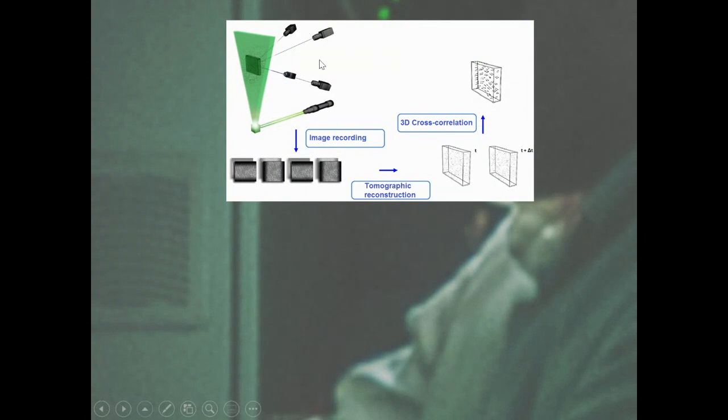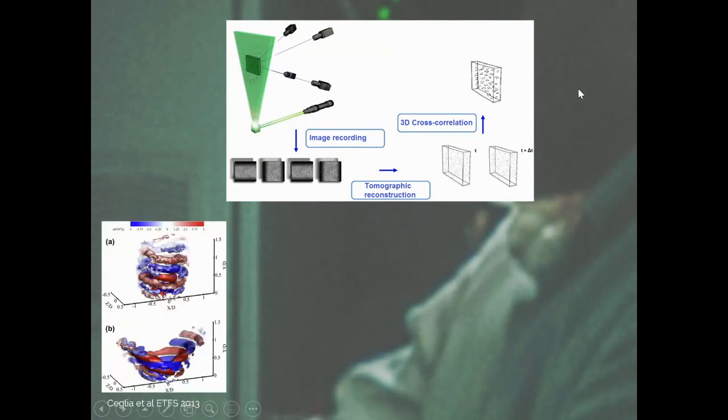And then if you have multiple views that simultaneously look at this cloud of particles, if you have multiple projections, you can use 3D reconstruction algorithms to get the cloud of particles. And then what you can do is if you take pictures with a short time separation, you can track those particles and have a three dimensional flow field with the three components of velocity.